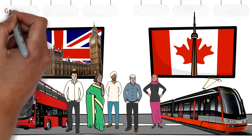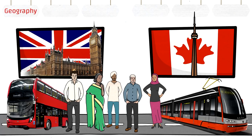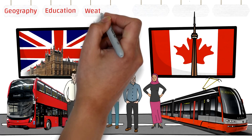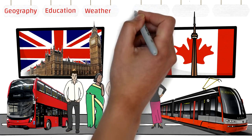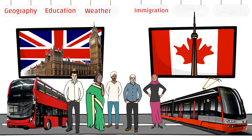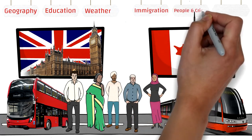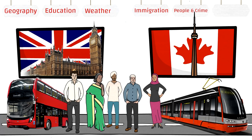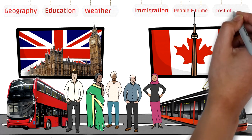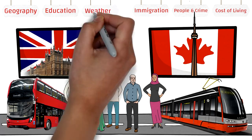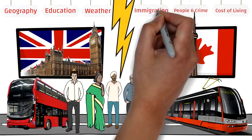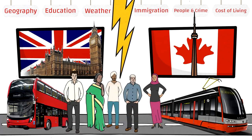In this video we'll compare the two wonderful countries based on various factors such as geography, education, the weather in various cities of UK and Canada, the different types of immigration in the two countries, the people and crime rate, how safe is Canada and UK, and the cost of living. This is going to be an ultimate comparison between UK and Canada, and hopefully by the end you'll be able to decide which country you want to immigrate to.